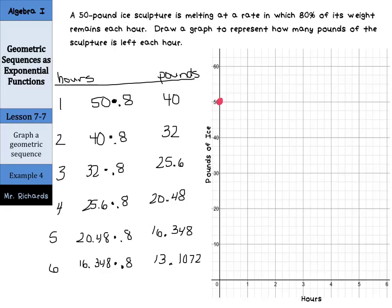Now we need to graph. As we examine our graph, we have 1, 2, 3, 4 to get between our levels of 10, which means each one of these lines represents a difference of 2.5. For hour one, we're going to be at 40 pounds of ice. For hour two, we'll be at 32, which is right about here, just below 32.5.